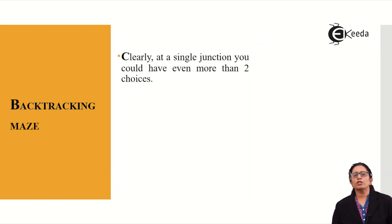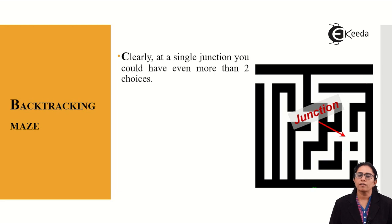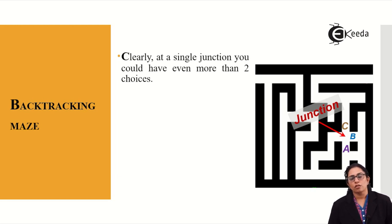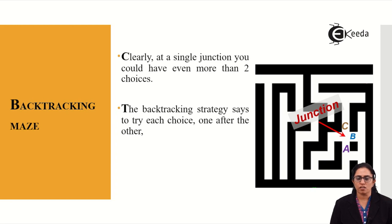At one particular junction in the maze there can be three options: I can go to A, I can go to B, or I can go to C. When I reach this junction my choices have increased. Whatever I have traversed to this point is considered correct. The backtracking strategy says to try each choice one after another — whether going from A, B, or C will lead me out of the maze.